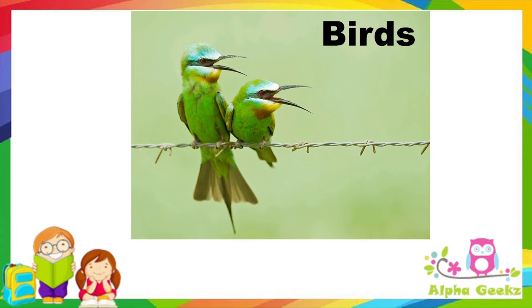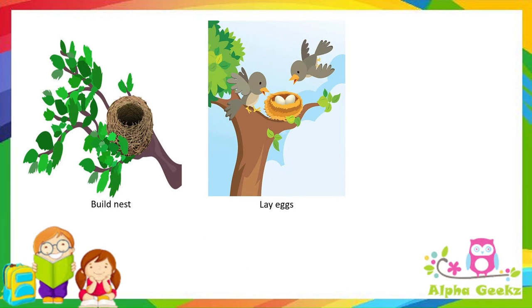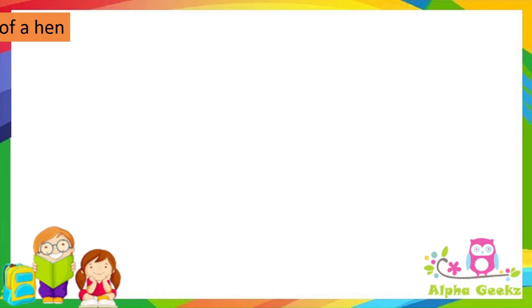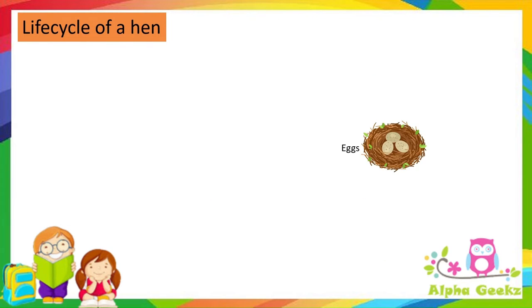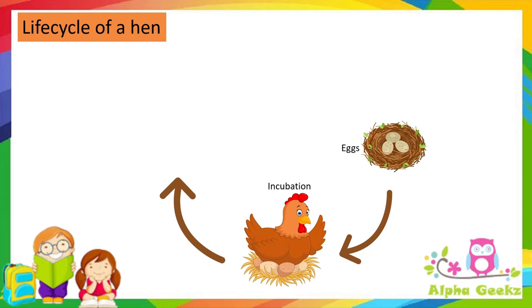Now let's look at reproduction in birds. Most birds build nests on trees to lay eggs and raise their babies. After laying the egg, the mother bird keeps the eggs warm by sitting on them — this process is called incubation. When the baby bird develops fully, it breaks open the eggshell and comes out, which is known as hatching.